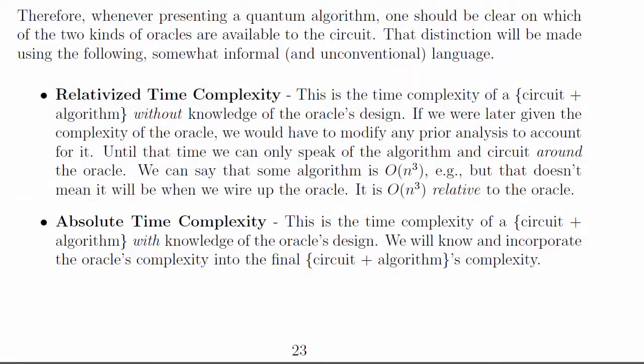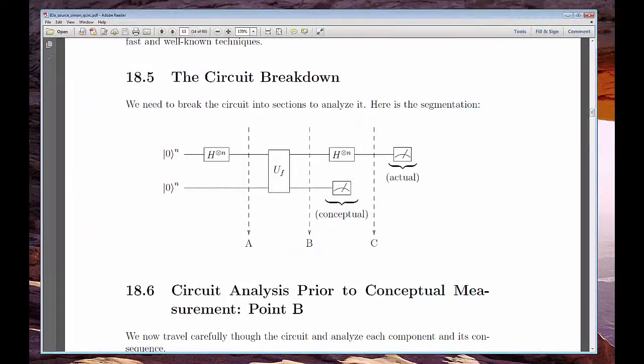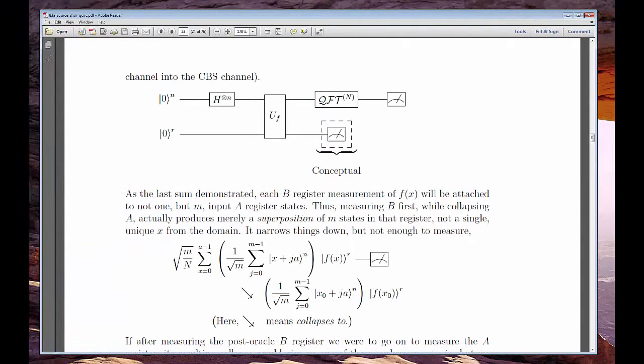With Simon's algorithm, we'll only get relativized speedup because we won't know the functions, and some periodic functions happen to have exponential growth. The same will be true of Shor's period-finding algorithm.